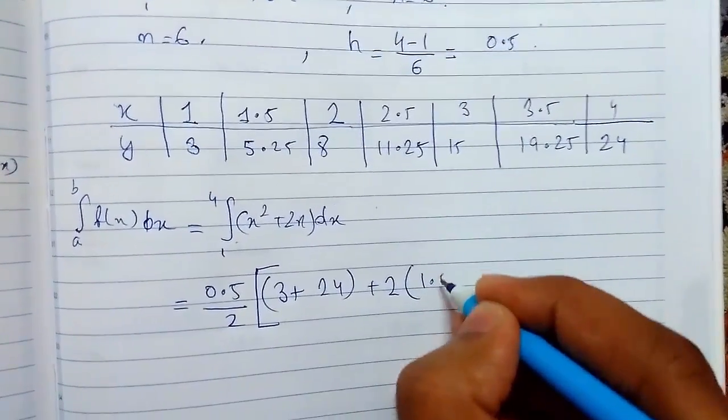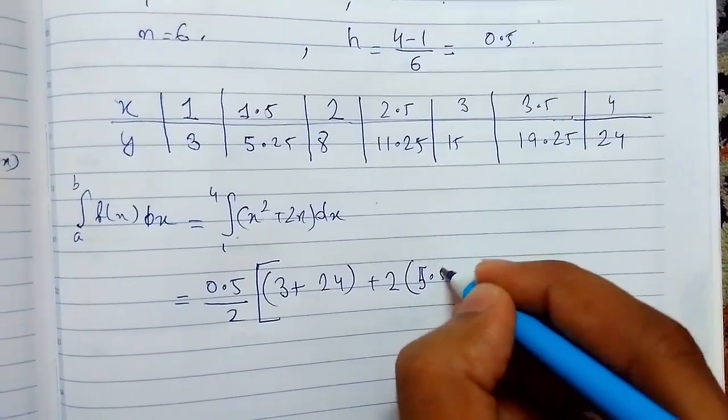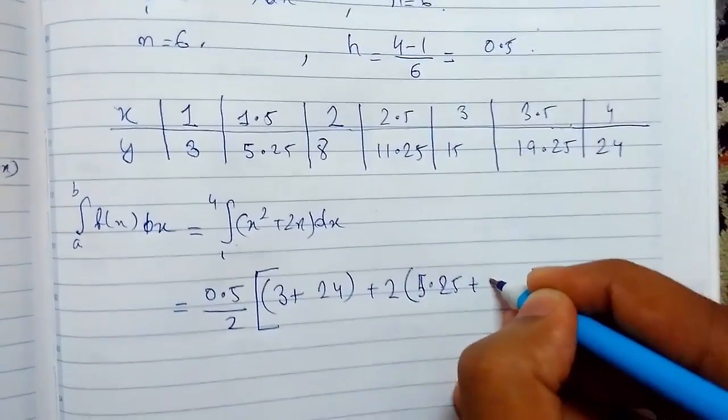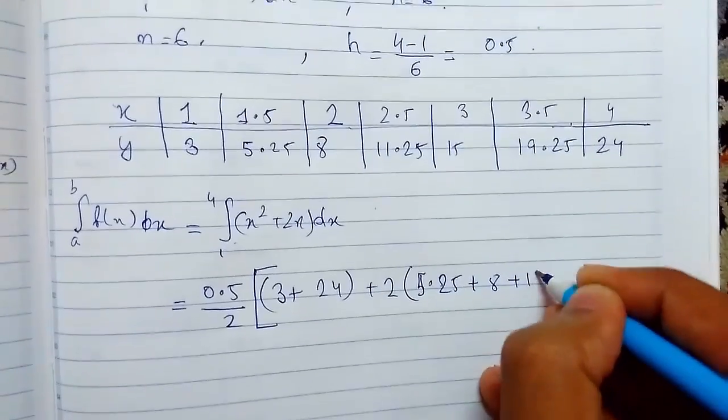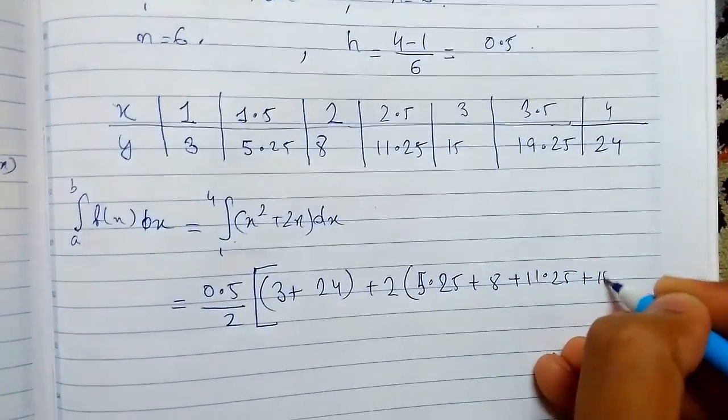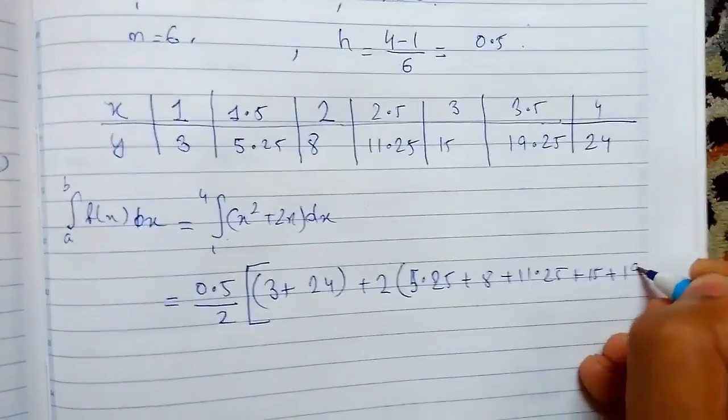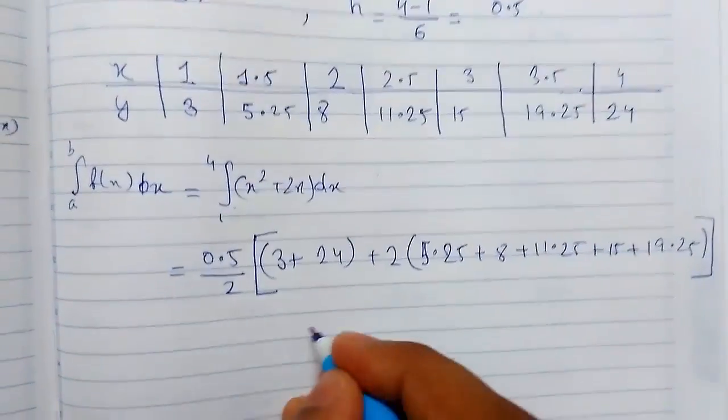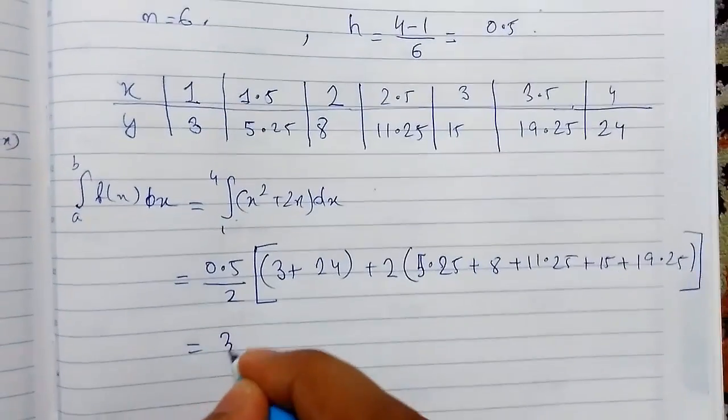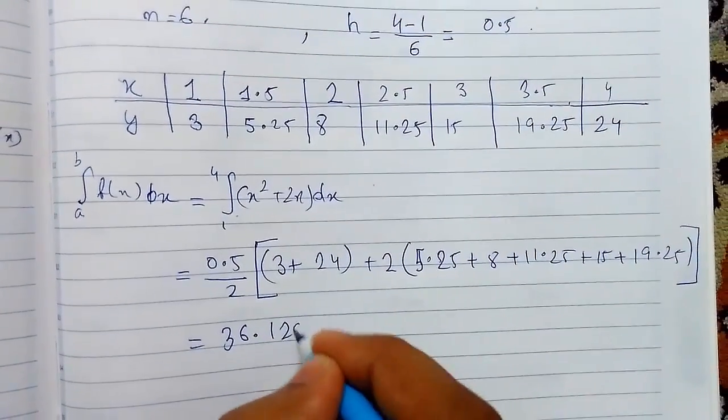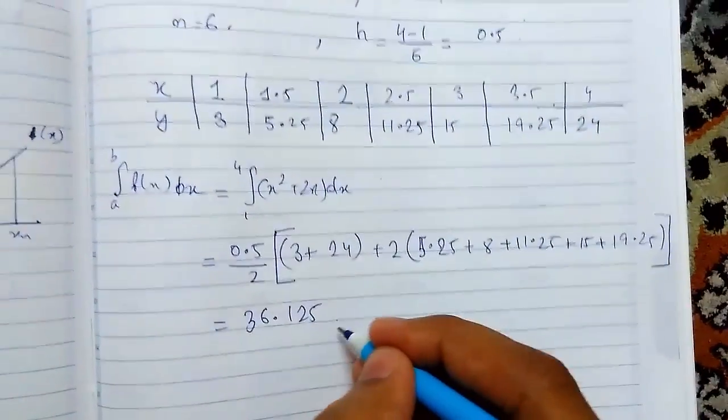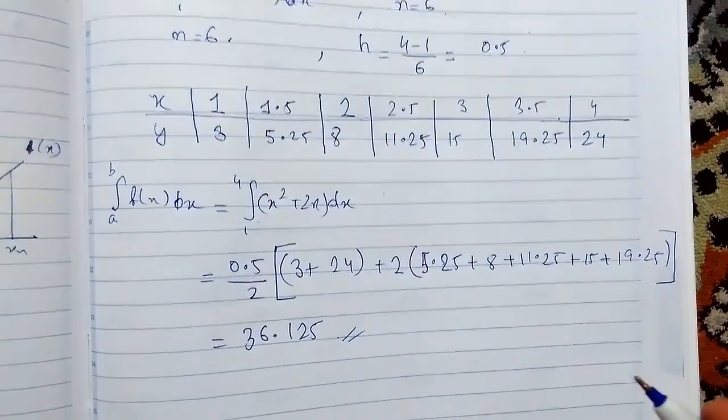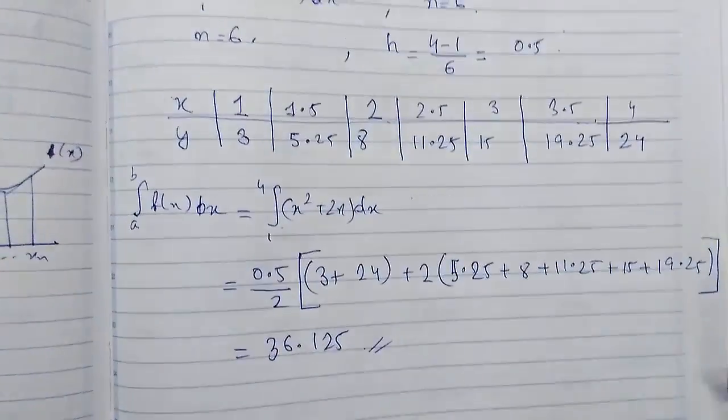2 times (5.25 + 8 + 11.25 + 15 + 19.25). Use a calculator to find the value. Finally, it equals 36.125. This is numerical integration by the trapezoidal rule. Thanks for watching.